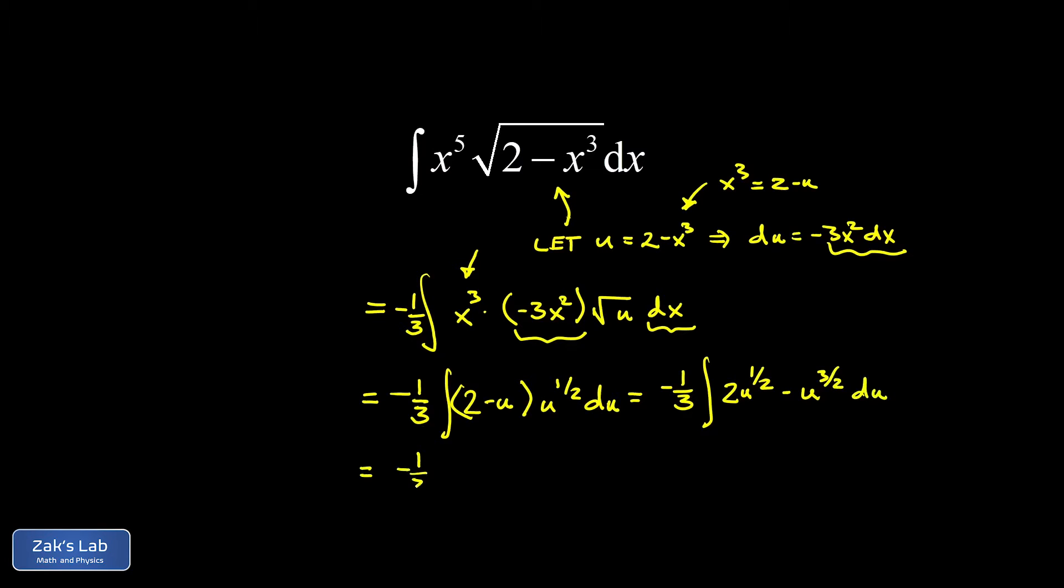So now I have negative one third, and then 2 times u to the three halves divided by three halves, which is the same as multiplying by two thirds. So there's a two thirds u to the three halves, and then minus u to the five halves divided by five halves, which is the same as multiplying by two fifths. And we have our general antiderivative, so now we introduce a plus c to the answer.